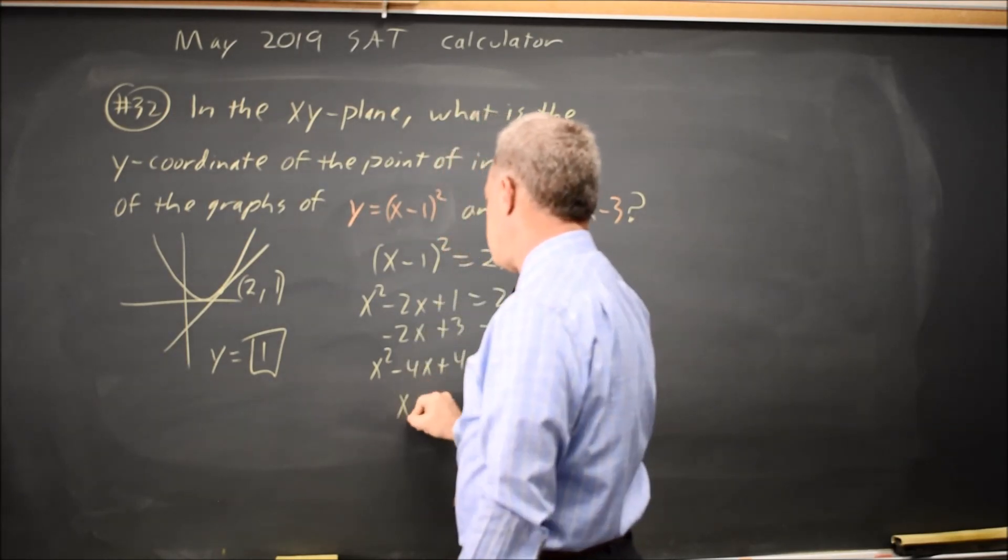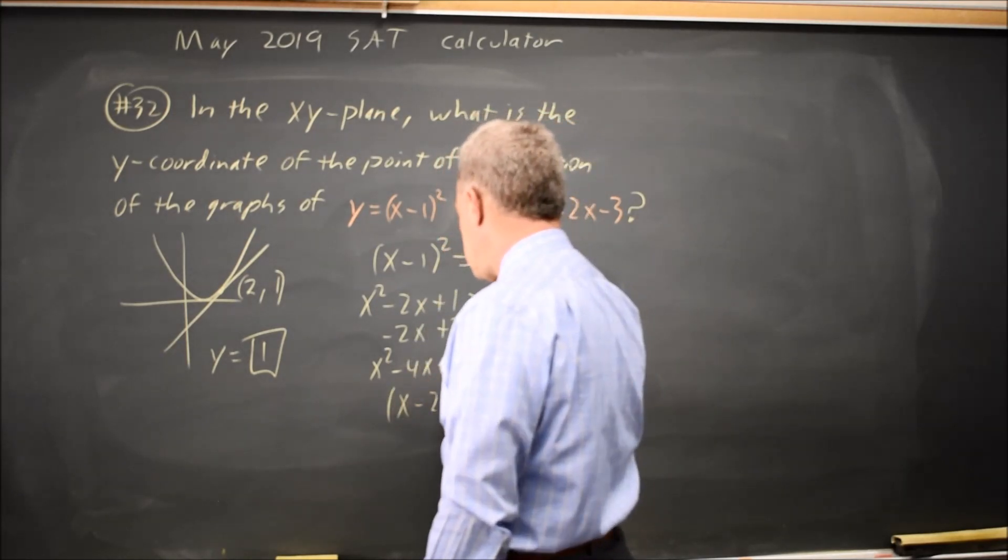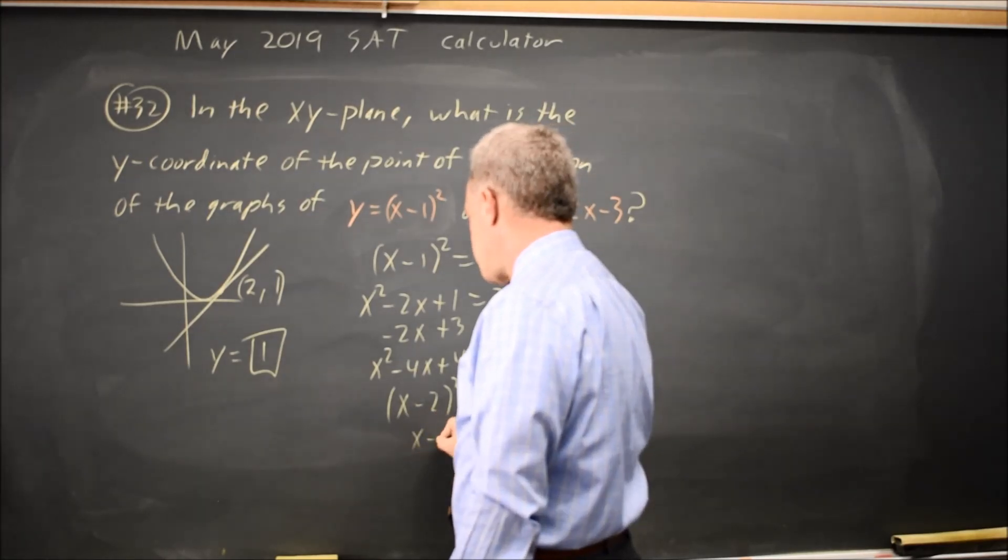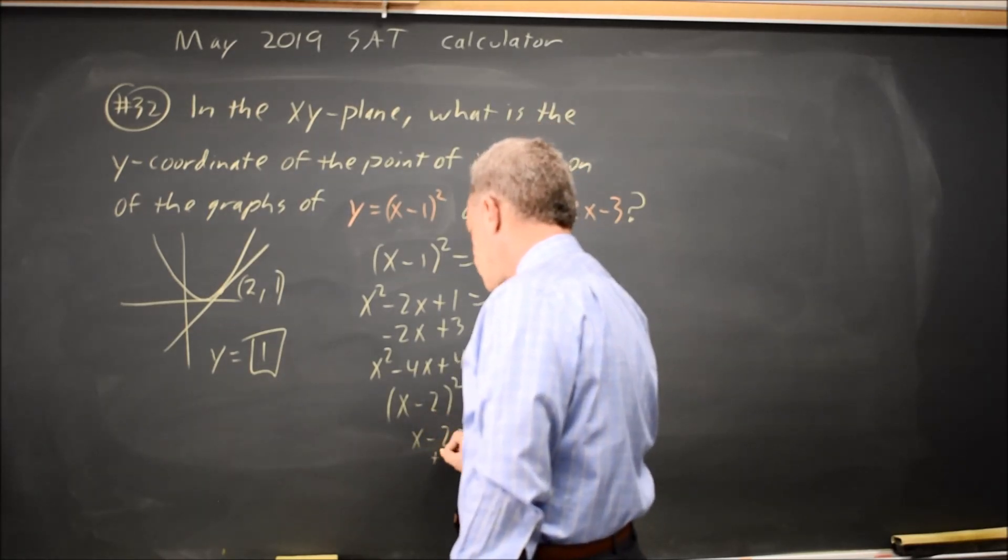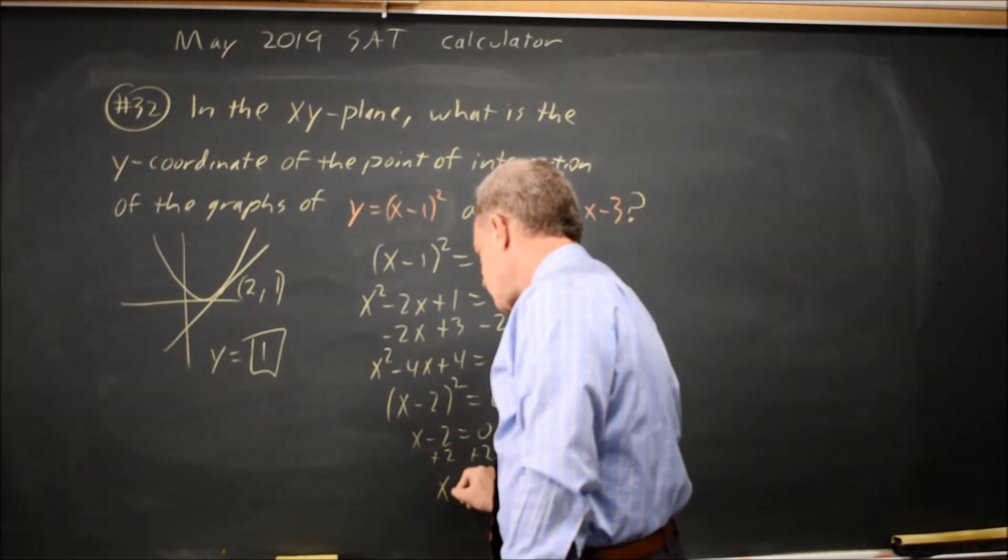That's a perfect square. x minus 2 squared equals 0 when I factor it, so x minus 2 equals 0, add 2 to both sides, x equals 2.